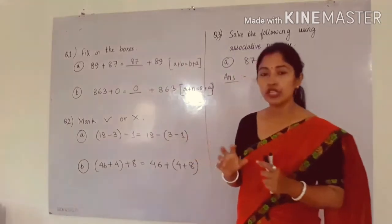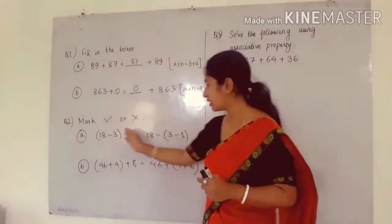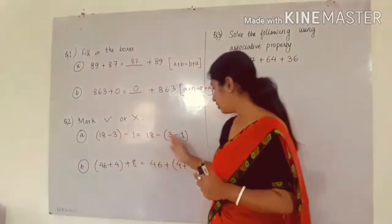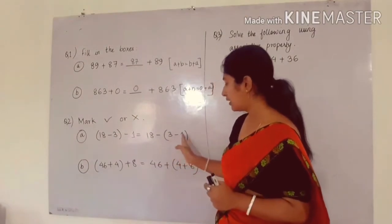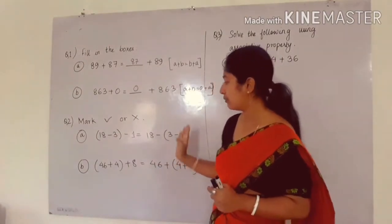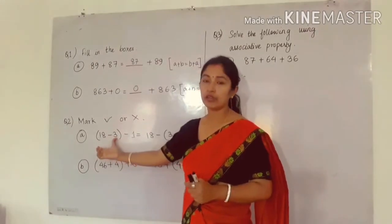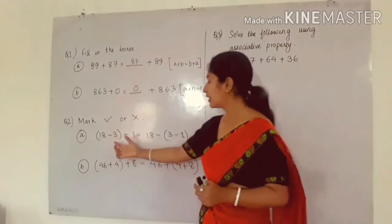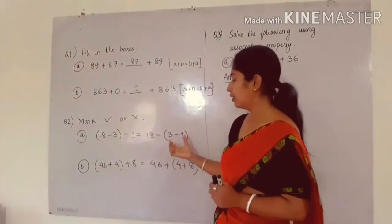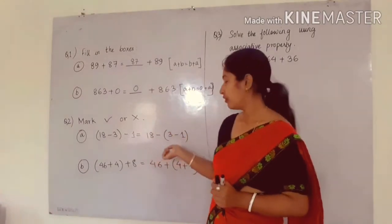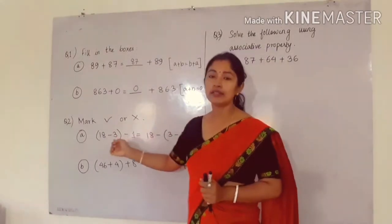You have to change the order. Here the order is changed — 3 minus 1 is in bracket on the right hand side, but in the left hand side we have 18 minus 3 in bracket. So when we solve left hand side and right hand side separately, we will get both answers different.